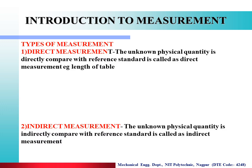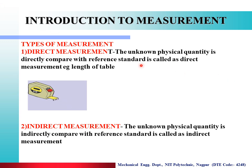Now we see the various types of measurement. The first type of measurement is direct measurement — where the unknown physical quantity is directly compared with the reference standard. That is called direct measurement.